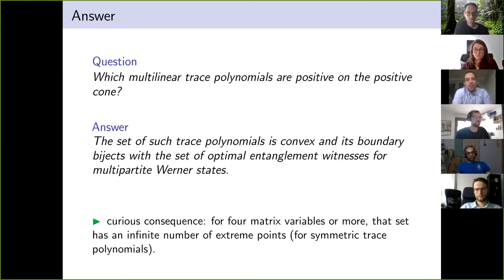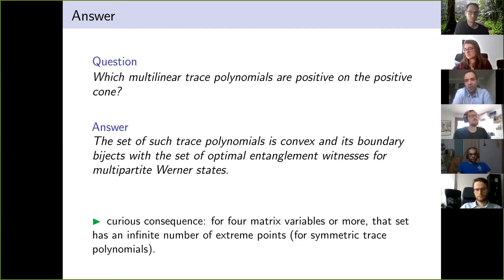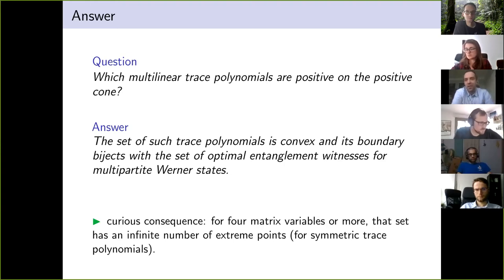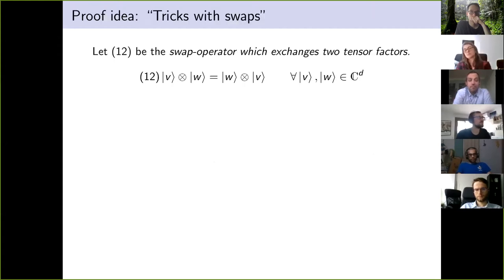Audience: Can one relate those things to multilinear entanglement witnesses invariant under the diagonal action of U? Felix: I got a bit ahead of myself there. Please go on, I got confused. Felix: Okay, I'll explain. These positive multilinear trace polynomials biject with essentially Werner state witnesses, and now I'll show you how to derive this — the basic trick, which is not really complicated after all.